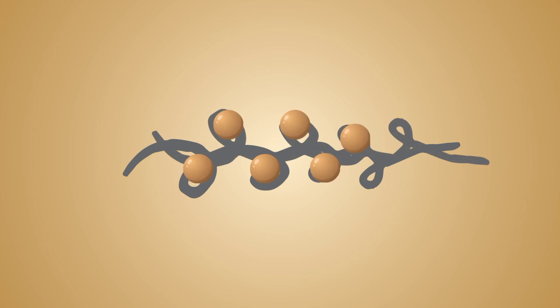Six such nucleosomes coil to make a turn, resulting in solenoid structure formation that looks like a coiled telephone wire. It is 30 nm in diameter, which is 300 Angstroms.